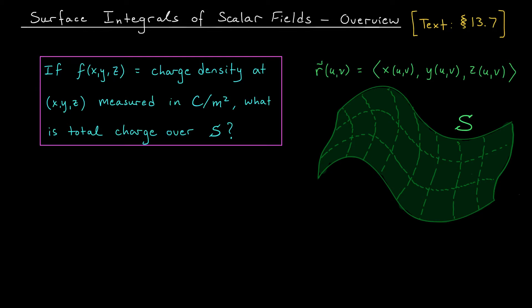Hi there folks, and welcome back. In our first lesson on parametric surfaces, I asked the following question: what would it mean to integrate a multivariable function over a curved surface? We know how to integrate such functions over flat regions in the plane with a double integral, over a three-dimensional solid with a triple integral, and even over a curved line in space using a line integral. But what if we want to integrate over a curved surface? Now that we've spent some time talking about parametric surfaces and surface area, we're ready to formulate a definition.